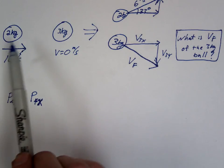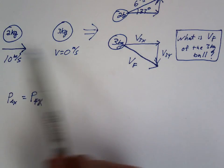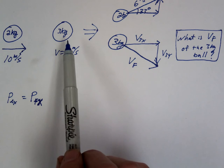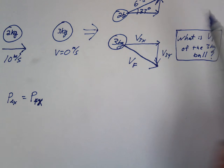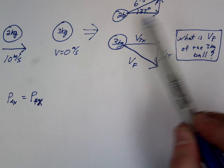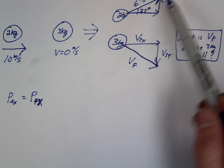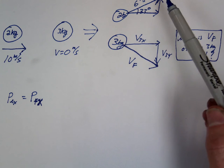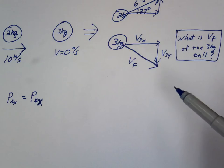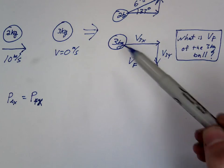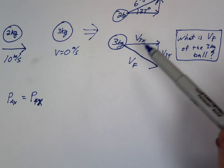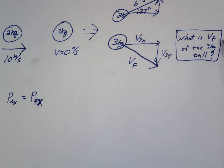In this problem we have our 2kg ball. It's going to hit the 3kg ball. Instead of going in a straight line, they're going to glance off. One's going to go north of east, one's going to go south of east. We want to figure out what's the v-final of the 3.